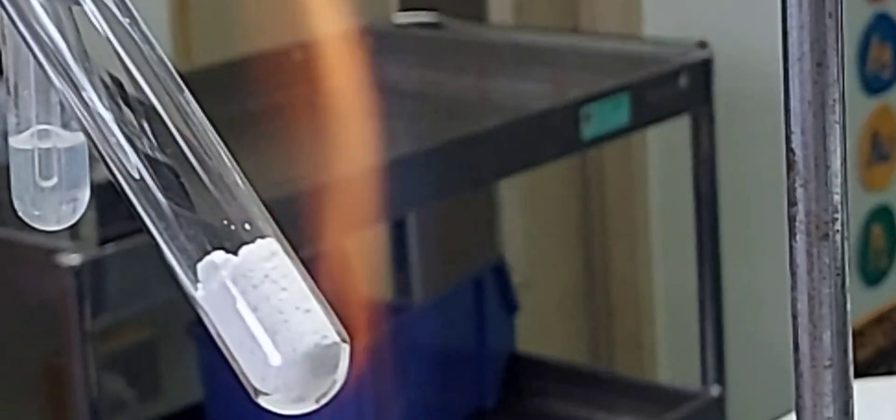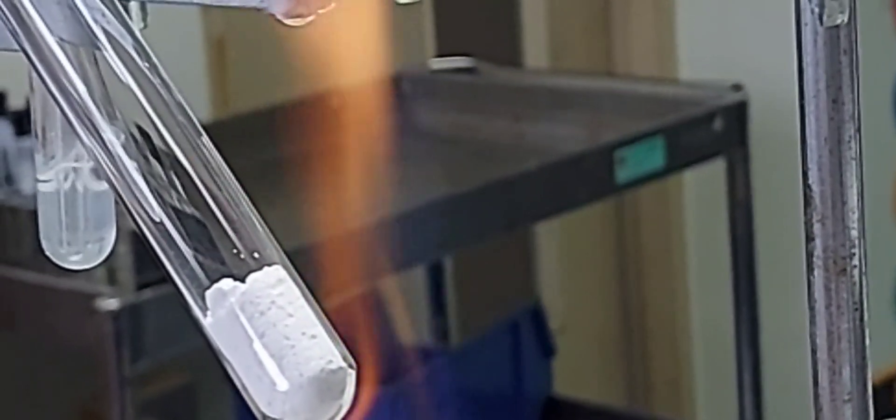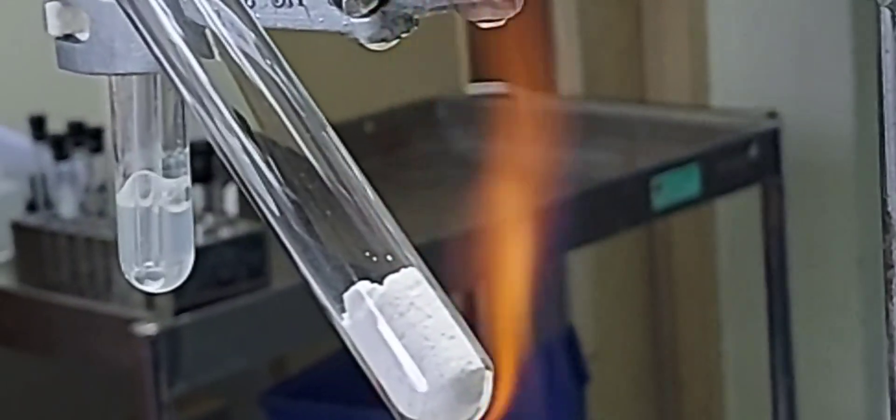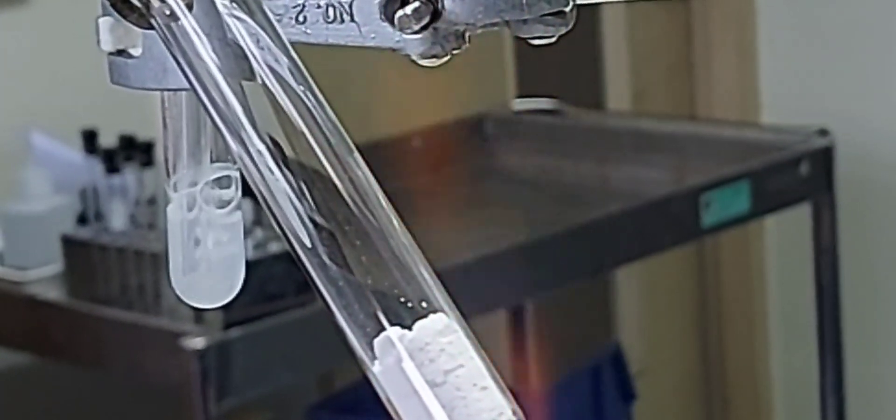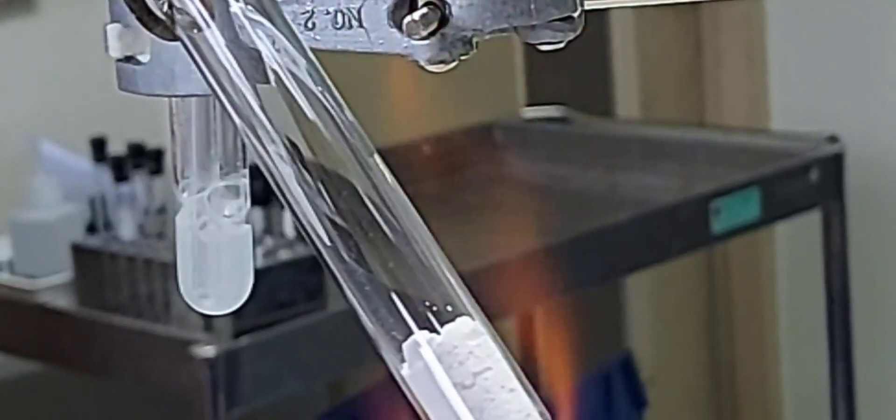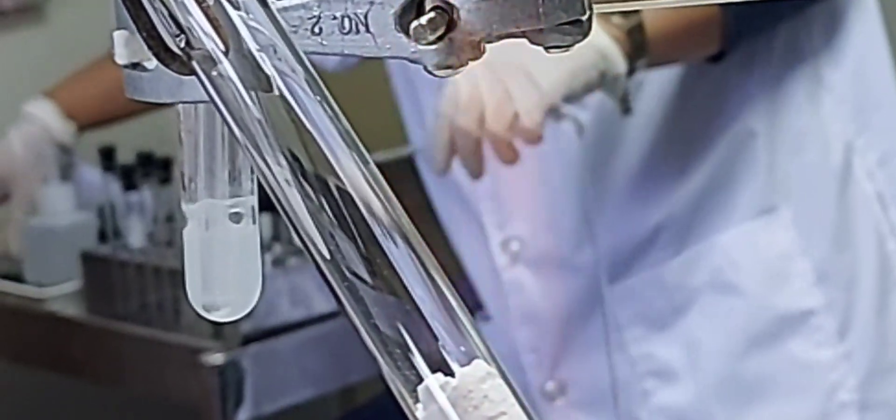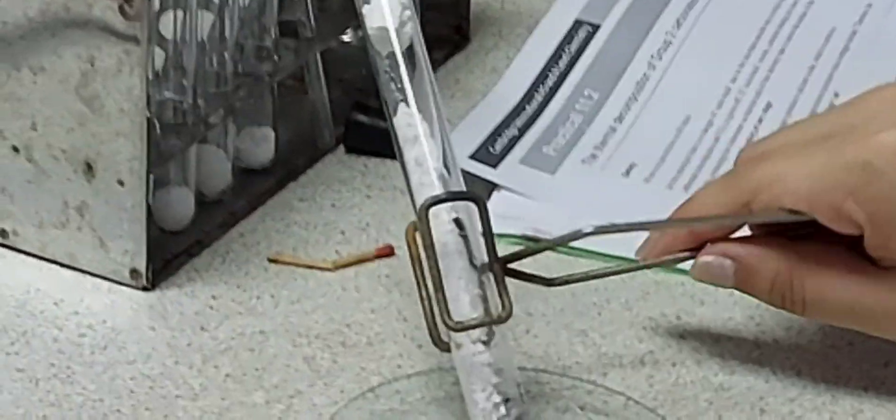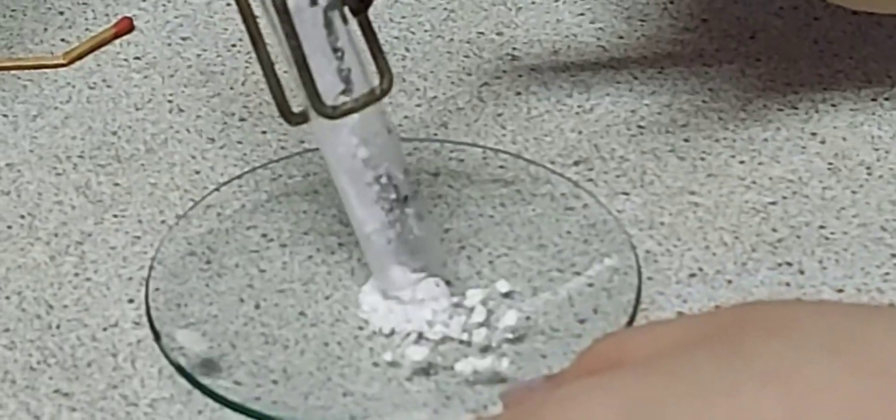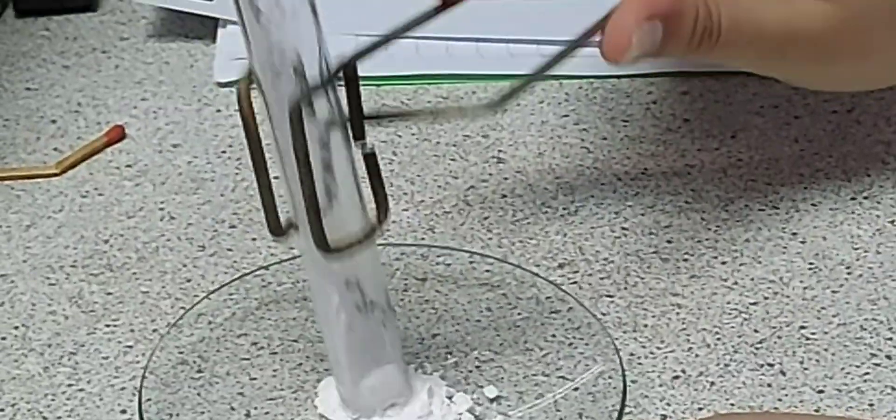After this, we take a little of the magnesium carbonate in a test tube and start heating. On heating, you will see bubbles of gas being given out and this is being passed through the lime water in another test tube. And as the bubbles of the colorless gas pass through the lime water, you can very clearly see that the lime water is turning cloudy or milky.